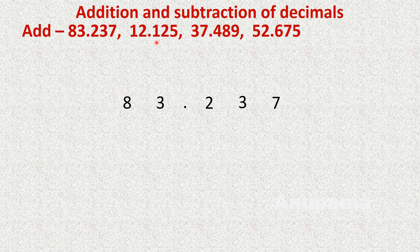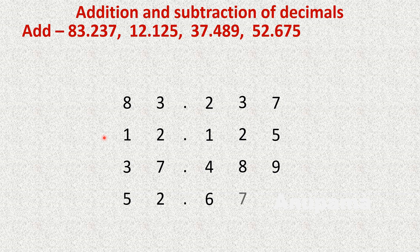We will write the second decimal number 12.125, then 37.489, then 52.675. Now we need to add them, so we will write the sign of addition.